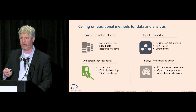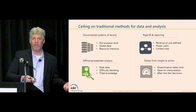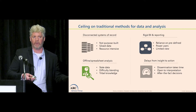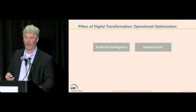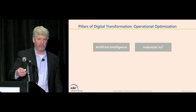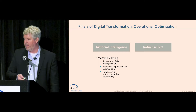Regardless of what your path is to digital transformation, it's good to reset it in terms of what you're trying to overcome. These are pretty traditional challenges — things like silos, limitations, speed to action. Today we're talking about some pillars around digital transformation as applied to operational optimization: AI and IIoT.